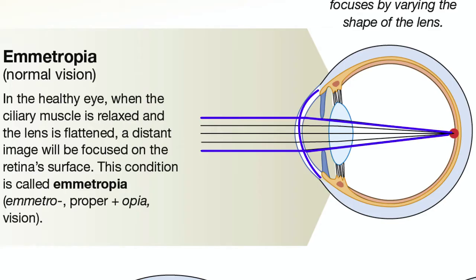In a normal eye looking at distant images, the ciliary muscle is relaxed, the lens is flat, and the light from that object is bent to focus a clear image on the retina's surface. Another name for normal vision is emmetropia.